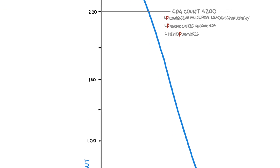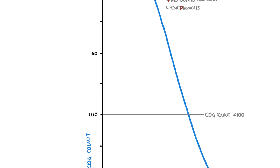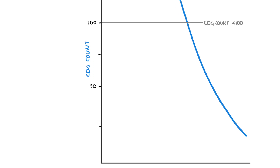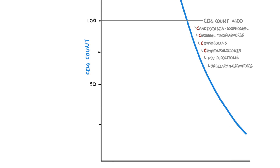Below a CD4 cell count of 100, conditions such as candidiasis of the oesophagus, cerebral toxoplasmosis, cryptococcus infection, cryptosporidiosis, herpes simplex virus infections, and bacillary angiomatosis can occur. I like to remember this group as mostly things with C in it — the C infections.